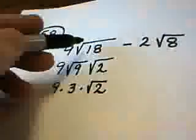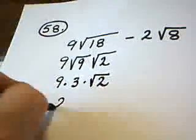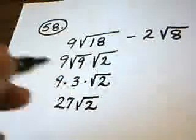So the front part of this, or the first term here, actually becomes 27 times the square root of 2.